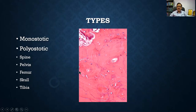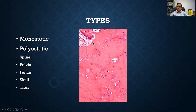In this histological picture, I am finding a very haphazard laying down of new bone. These are the osteocytes, and these are mosaic lines, with the bony trabeculae being demarcated.